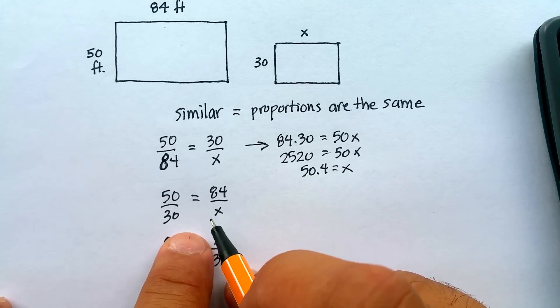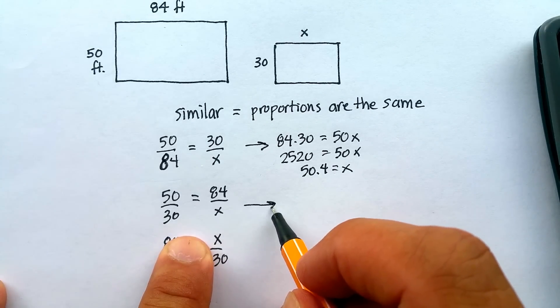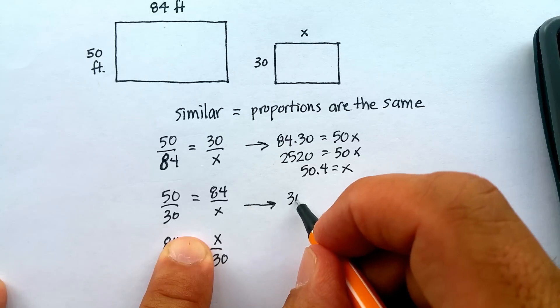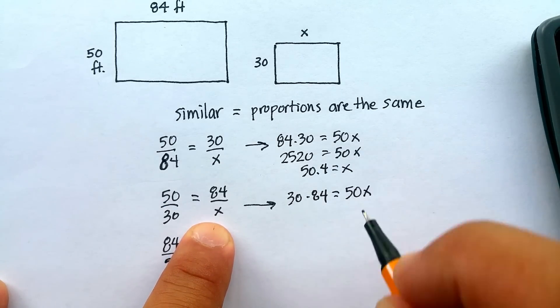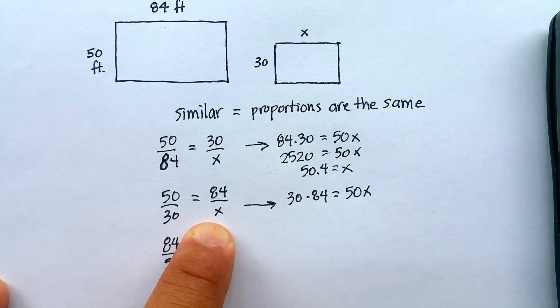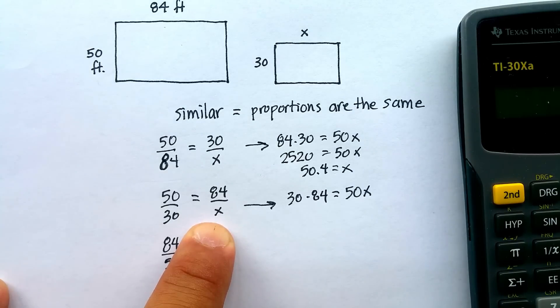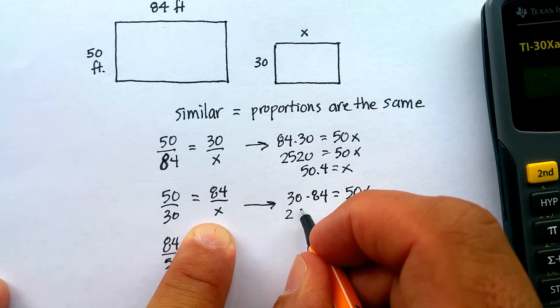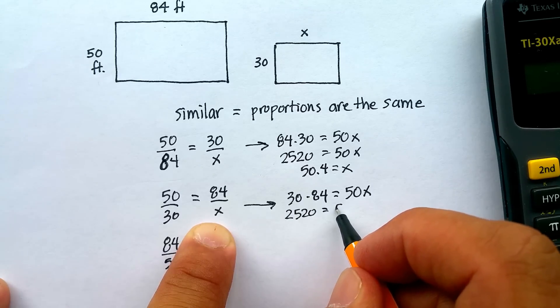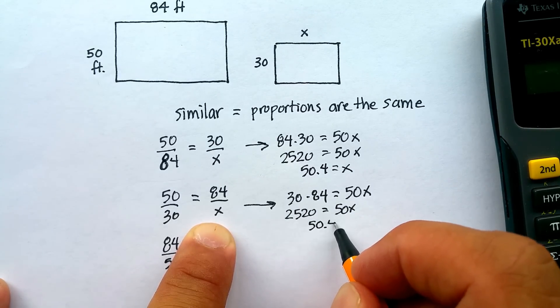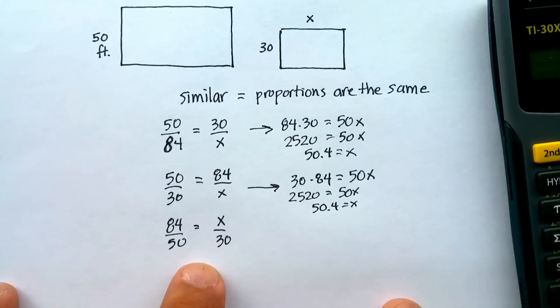Let's see if that would get the same numbers here. Cross products would give me 30 times 84. It should be equal to 50 times x. 30 times 84, it gives me 2,520. Sure enough. 50 times x. It's the exact same as the top one. So it's 50.4, divided by x. And finally, let's just go down here.